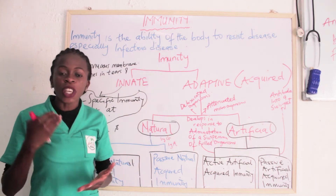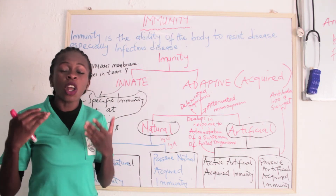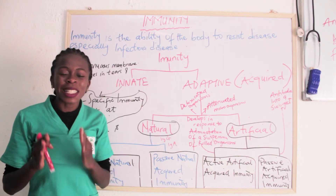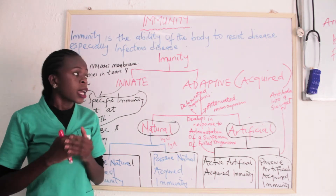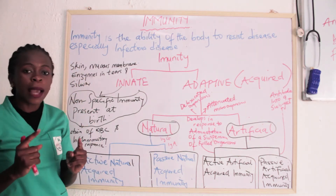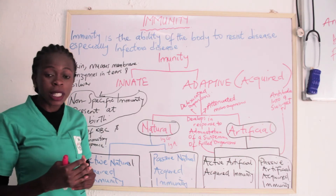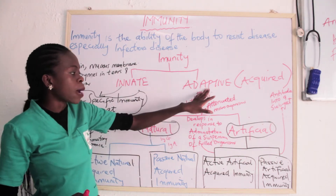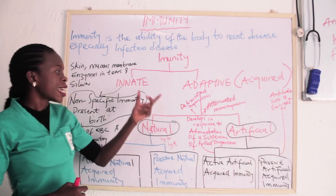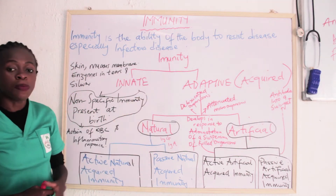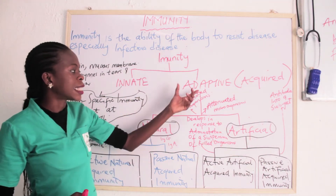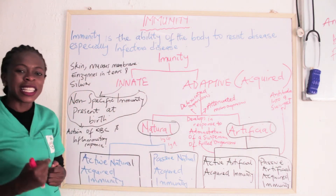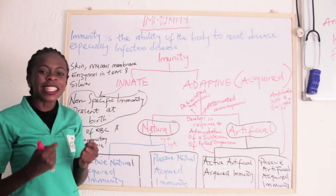There are different types of immunity, and a lot of students have been complaining about how to differentiate the various types. Basically, there are two types of immunity: we have the innate immunity and the adaptive immunity. We will start with innate immunity.